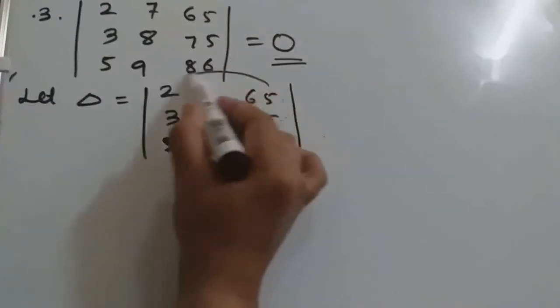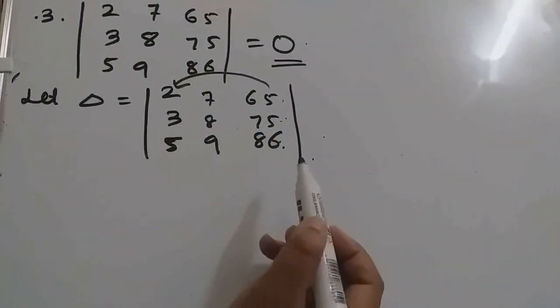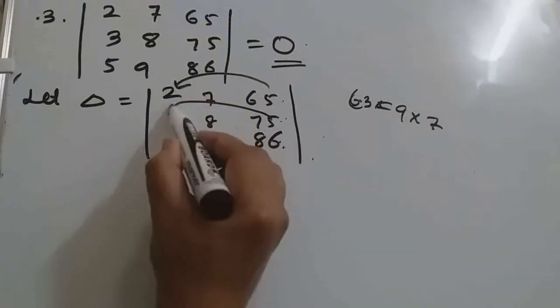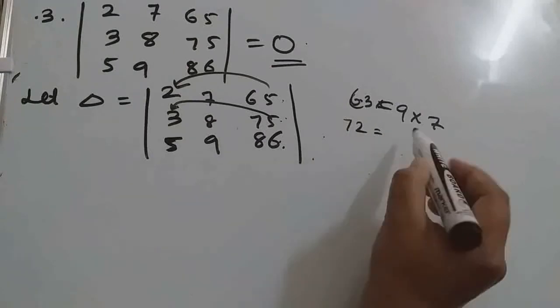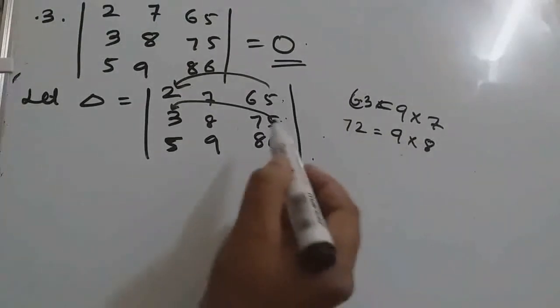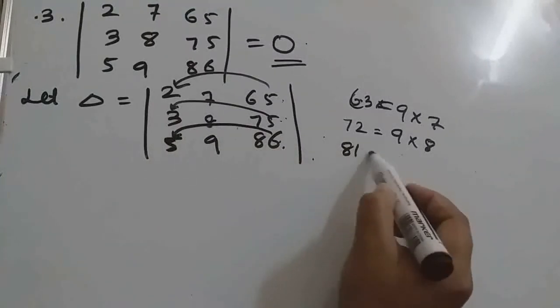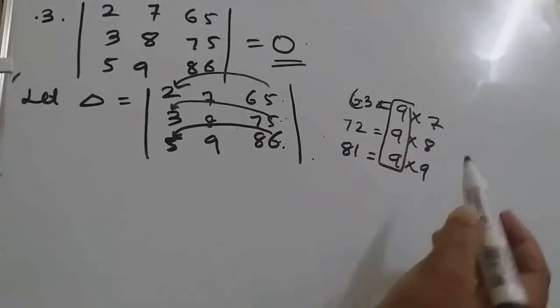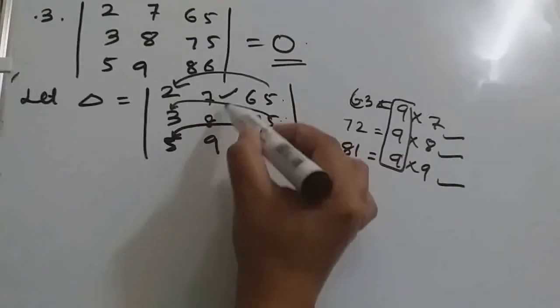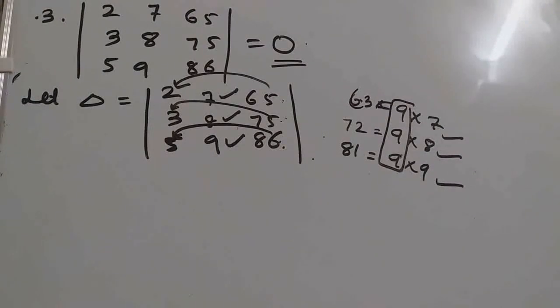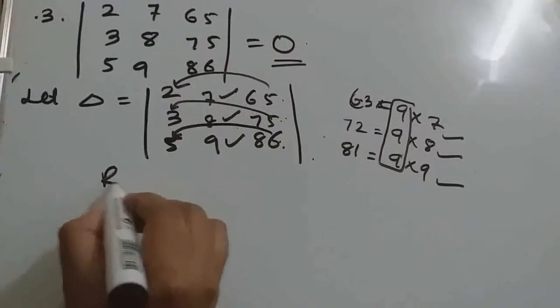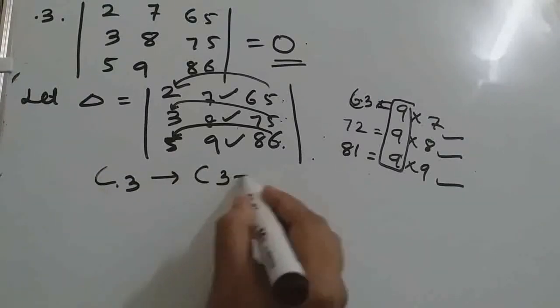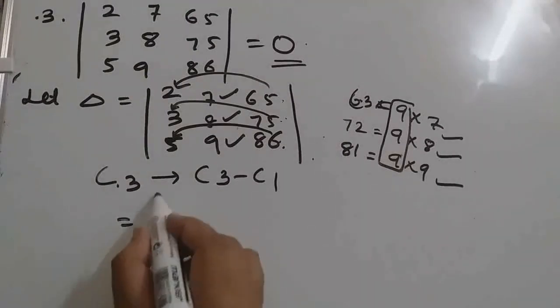So what we can do here? See, 65 minus 2 will give 63. 63 is what? 9 into 7. 75 minus 3 is 72. 72 is what? 9 into 8. 86 minus 5 is 81, and 81 is 9 into 9. So we can take 9 common. 7, 8, 9 is the second column entry. Isn't it? So what we can do here? We can do C3, sorry, C3 we are changing. So we can do C3 minus C1 here.